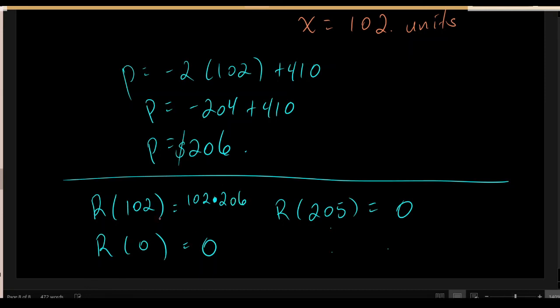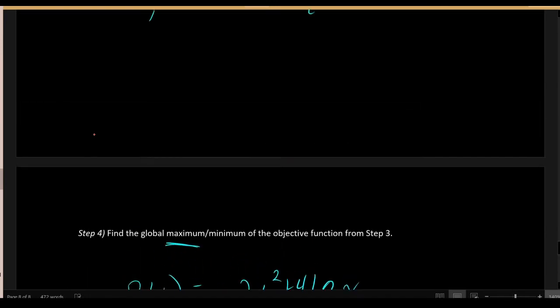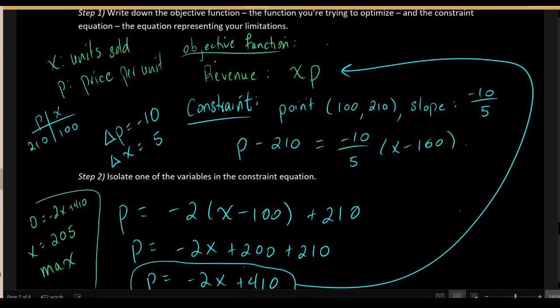This concludes today's material. We gave a four-step process to solve constrained optimization problems. First, identify the quantity you're trying to minimize or maximize — the objective function — and write a formula for it; often this involves two input variables like units sold and price, length and width, or height and radius. Then write the constraint equation representing your limitations, which gives a relationship between the variables. Use it to reduce the objective function to one variable, then maximize or minimize using calculus techniques.